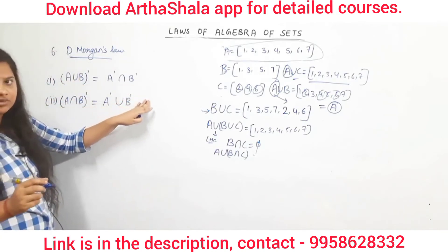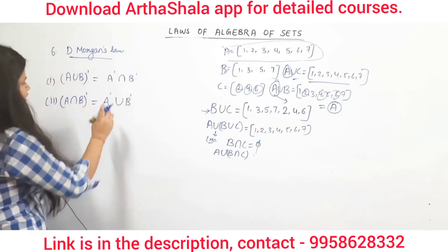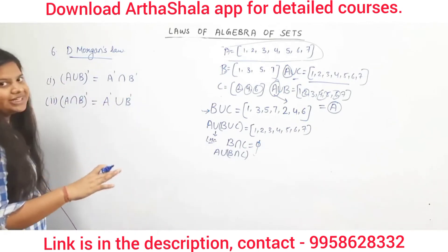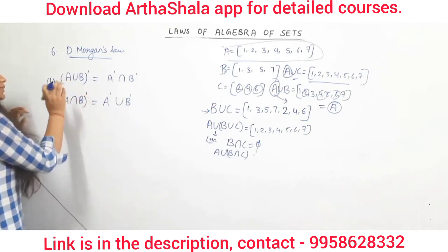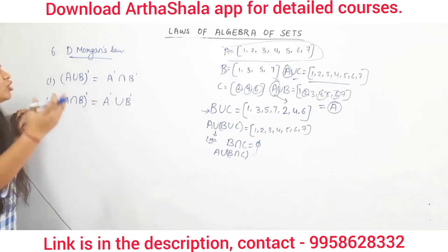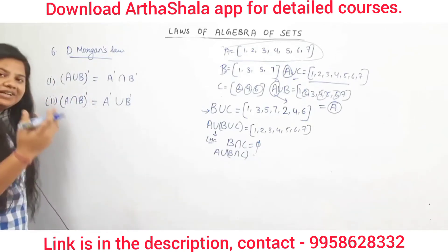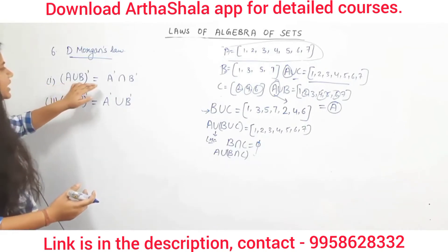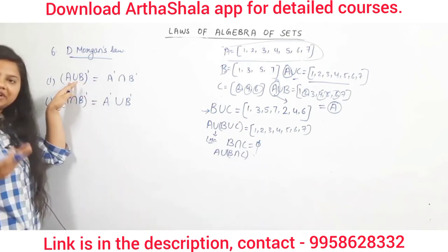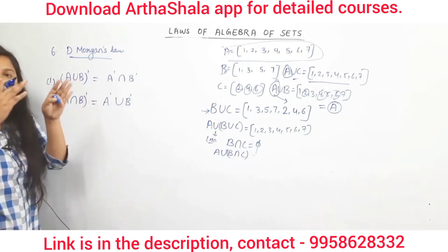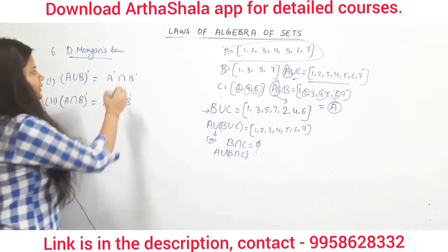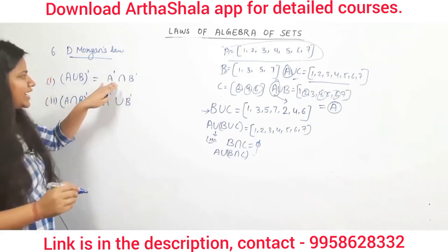The second De Morgan's law states that (A intersection B) complement is equal to A complement union B complement. These two laws are very important and will be used extensively in applications involving sets.